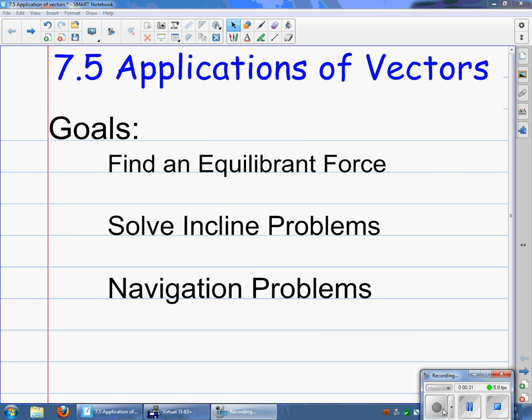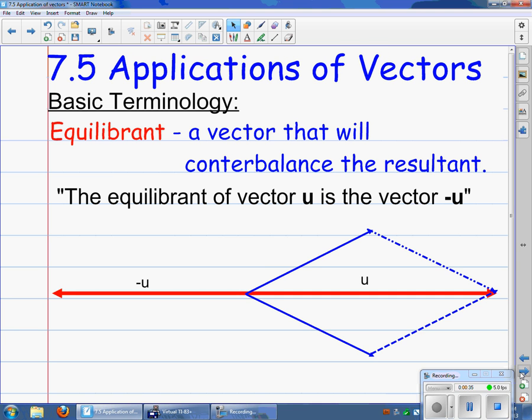So our first example here is going to involve equilibrium forces. Let's go ahead and quickly define that. An equilibrium is a vector that will counterbalance the resultant. And what you've got to remember is that the resultant of two or more vectors is actually their sum.